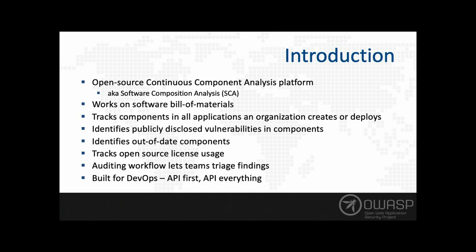Dependency Track works on the concept of a software bill of materials, where we tell it factually what components we have. From there it monitors all tracked components for known vulnerabilities as well as out-of-date components. Out-of-date components is really important because only a small portion of all vulnerabilities are actually published to things like the NVD. It also tracks open source licenses, though as an OWASP project I'm focused more on security aspects.